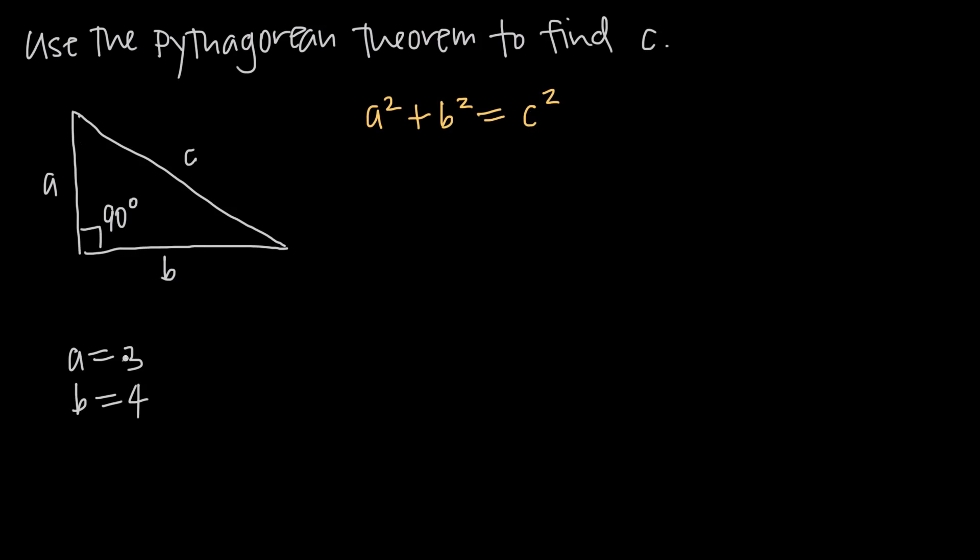If we say that a is equal to 3 and b is equal to 4, so the length of this side a is 3, and the length of this side b is 4, how long is the hypotenuse? What's the length of the hypotenuse c?